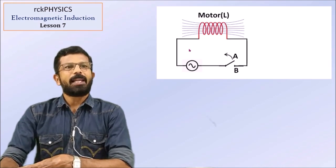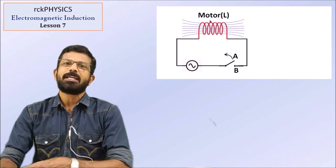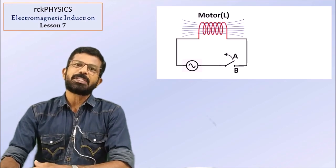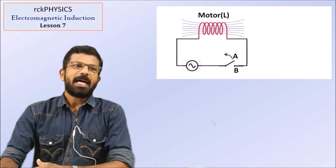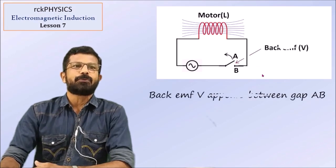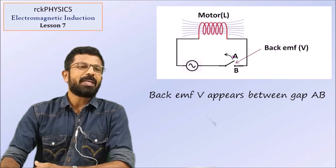So, if you are looking at this coil, the motor is self-induced — a back EMF, an induced EMF, is developing. That is where it appears. The induced EMF will appear across the open terminals of this switch. The back EMF V is across the switch.